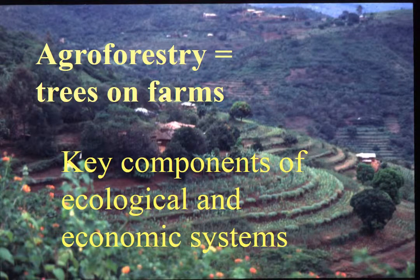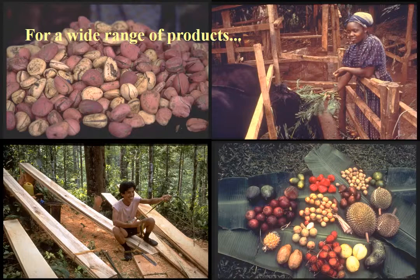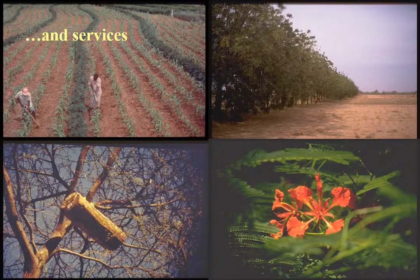Agroforestry can be defined simply as trees on farms. Trees are key components of ecological and economic systems. Farmers integrate them for a range of products, including fruit, timber and fodder, and for the services they contribute, such as soil fertility, water regulation, microclimate control, or simply aesthetic reasons.